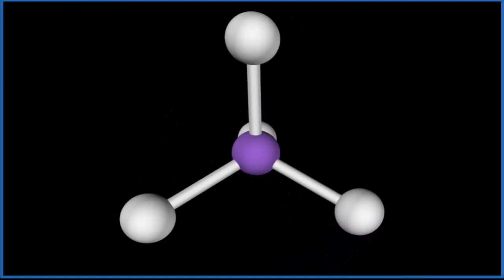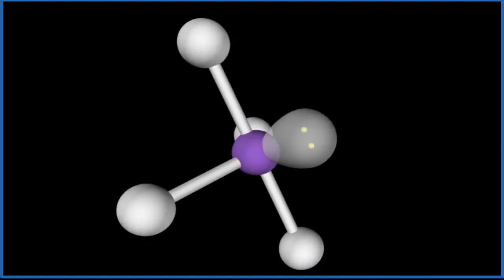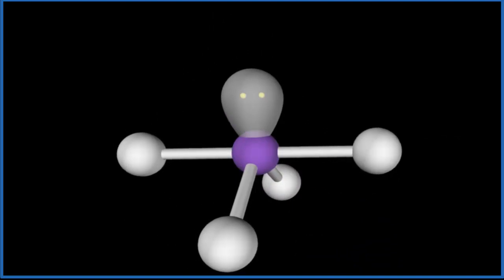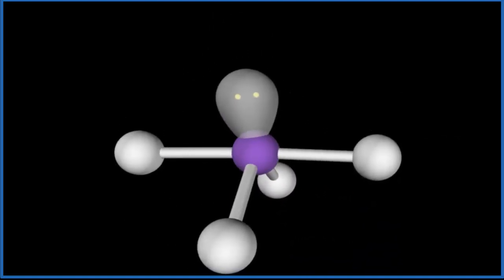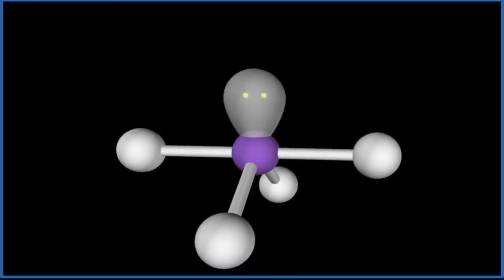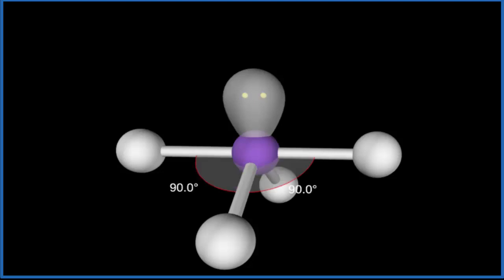But don't forget that lone pair. That occupies space and when we add that lone pair, it's going to push these atoms down and we end up with our seesaw molecular geometry here. If you want to look at the bond angles, they should be about 90 degrees here for each one of these.